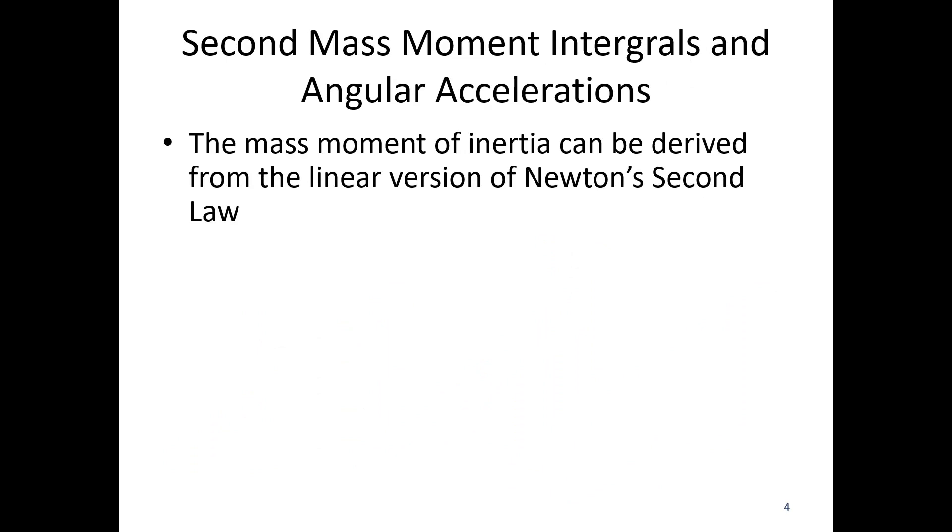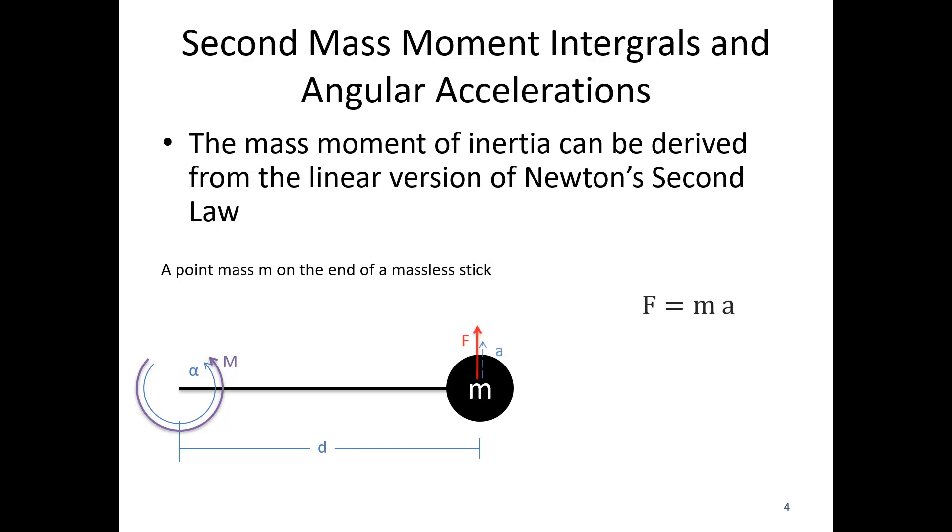The mass moment of inertia can be derived from the linear version of Newton's second law through the following process. Say we had a point mass m on the end of a massless stick. So we've got some little bit of mass on the end of a stick. The stick itself does not weigh anything. So we've got mass and distance here. Say I took the end of that and I applied some moment to the end of that stick. And I want to know what is the relationship between the moment and the angular acceleration. If F equals ma, I know I can start there with Newton's second law.